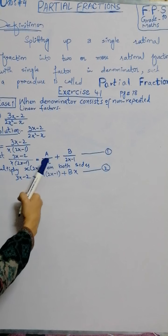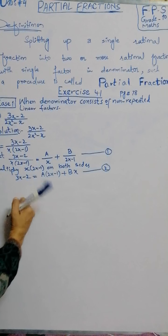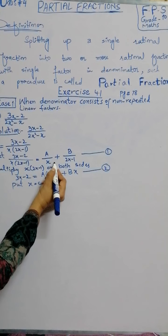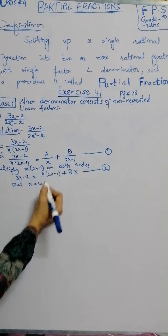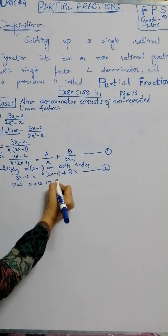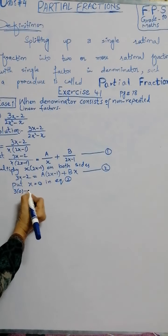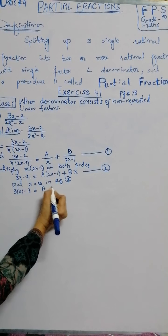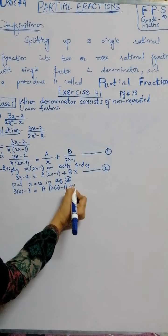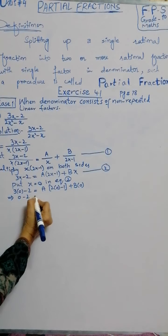Now, for the first fraction A by x, the denominator is x. From this we get the value of x equal to 0. We put x equals 0 in equation 2. In x's place we write 0: 3 times 0 minus 2 equals A times (2 times 0 minus 1) plus B times 0.